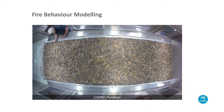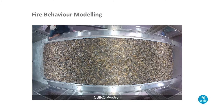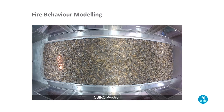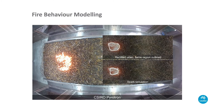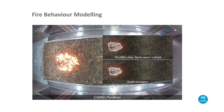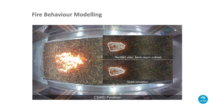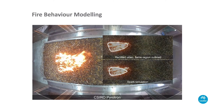One of the fire behavior models we use is called SPARK, developed within CSIRO. We have a wonderful installation called the CSIRO Pyrotron, which is basically a wind tunnel oven. You put in a bed of fuel types, light it up, blow a wind across it, and look at how that fire evolves. It gives you a lot of information about the behavior of the fire. The actual fire burning is on the left with wind blowing left to right; the top right is a rectified video of how that fire region is evolving.